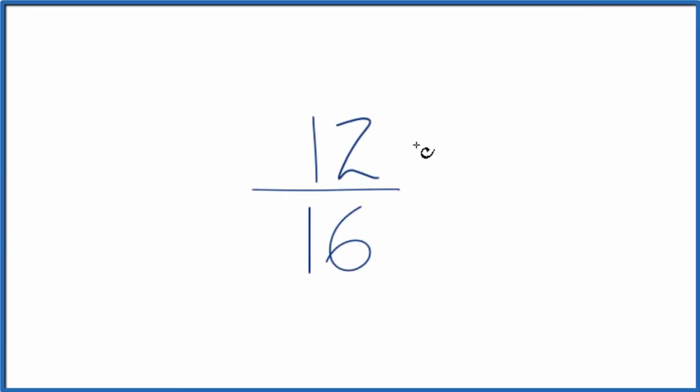If you need to find equivalent fractions for 12 16ths, here's how you do it. What we want to do is find another fraction that's equal to 12 over 16, 12 divided by 16. It has the same value, just that the numerator and denominator are different.